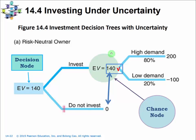Now let's talk about investment decisions under uncertainty. Let's look at a decision tree. We start with a decision node in a rectangle. If the decision maker chooses to invest in the risky project, a chance node in a circle shows the different outcomes and their probabilities. For this risky project, demand for the new product can be high or low — 80% chance of high demand and 20% chance of low demand.